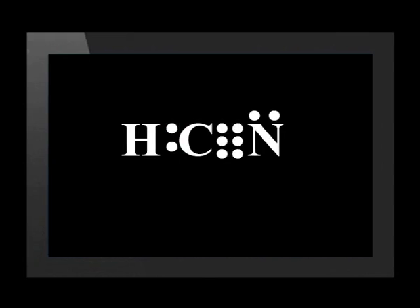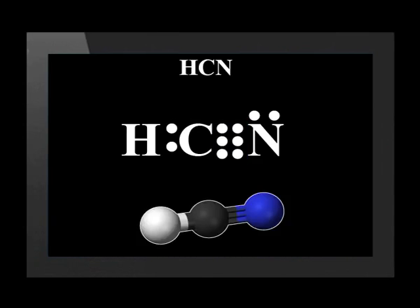The carbon and nitrogen atoms share 3 pairs of electrons. In other words, they form a triple bond between them. So the hydrogen cyanide molecule contains 1 single bond and 1 triple bond.